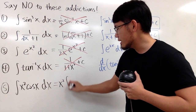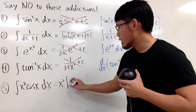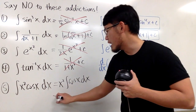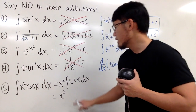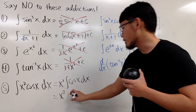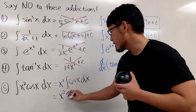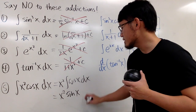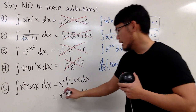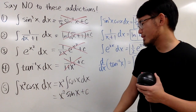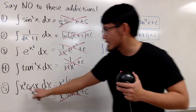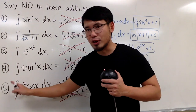And then they compute the integral of cos x dx, saying this is x squared times sin x. They get the cos x integral right — the integral of cos x is sin x. And yes, they remember the plus c. But no — you cannot bring a function out. The x squared has to stay inside the integral.